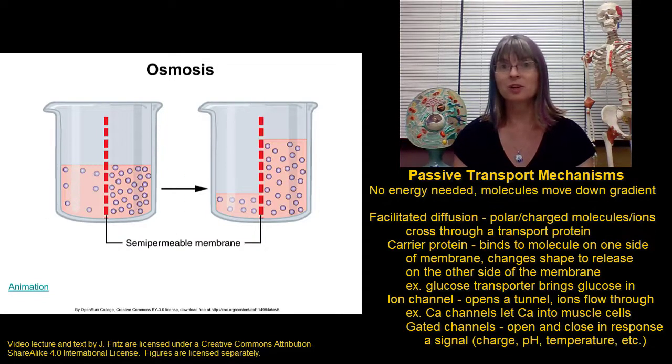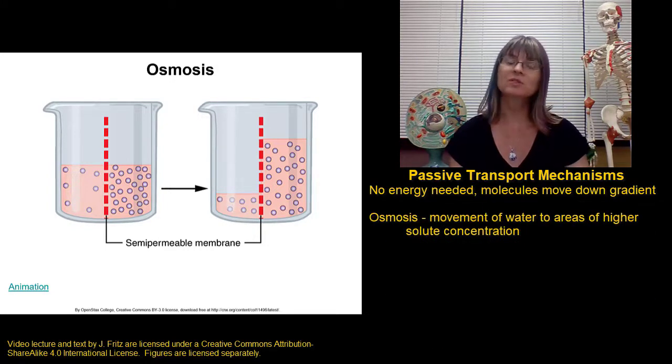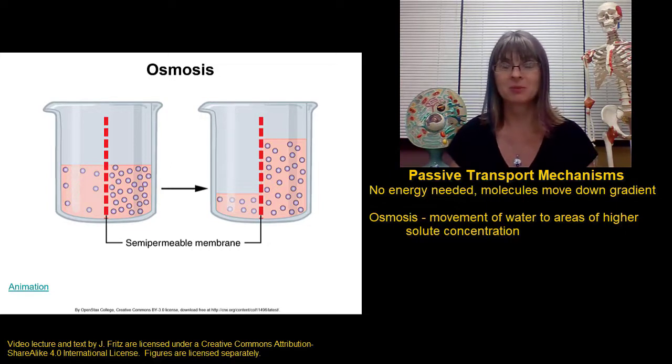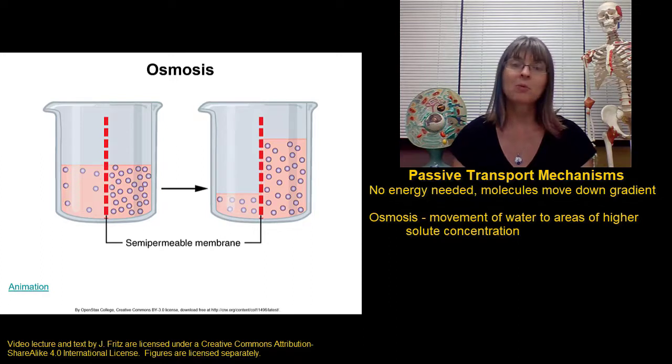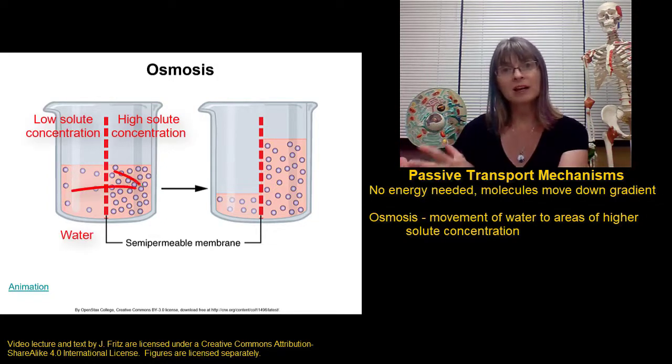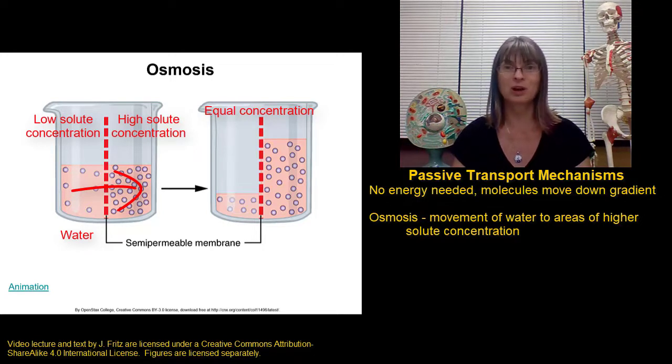The last of the passive transport mechanisms to talk about is osmosis. We can think of osmosis as being the diffusion of water. In this case, the solute molecules stay where they are, but water will move from one side of a membrane to the other side of a membrane. The reason for this is that water is attracted to solutes. Water likes to surround solute molecules. If we have more solute on one side of a membrane than on the other, water will be attracted to the area with the most solute. This movement of water, or the attraction of water by these solutes, is referred to as the osmotic pressure.